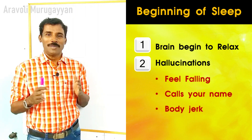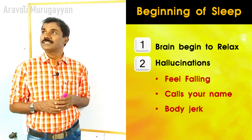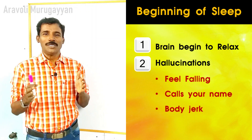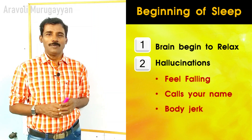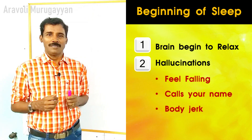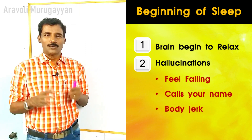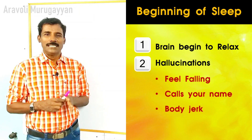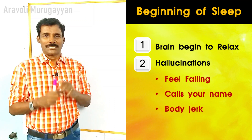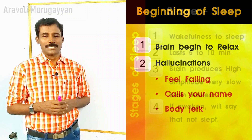Sometimes you may feel that somebody is calling you by your name. Suddenly you will get up and see nobody is nearby — this is also a type of hallucination. Another type is when your body suddenly jerks while sleeping. These various hallucination events take place in the first 5 to 10 minutes, which is the beginning of the sleeping stage.